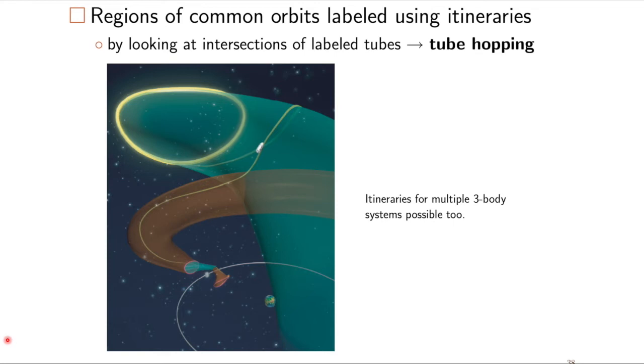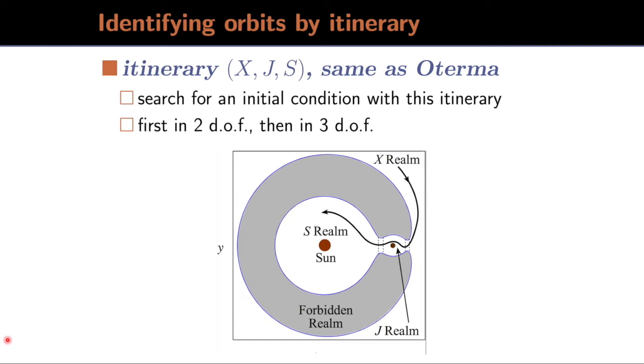For example, let's construct an itinerary that's the same as Oterma. We would label this itinerary XJS. It starts in the exterior realm. The X realm goes to the Jupiter realm and ends up in the Sun realm, at least for the first part of its journey.